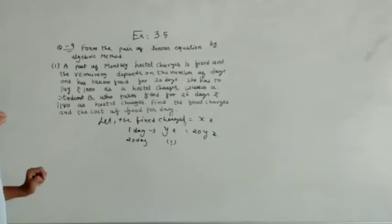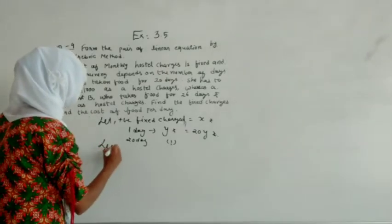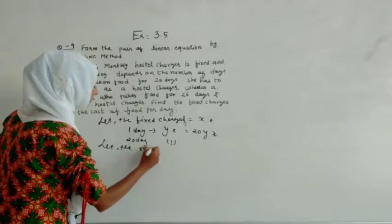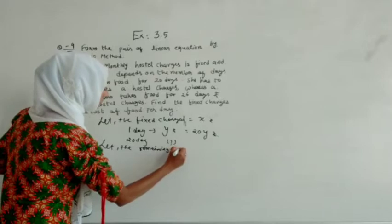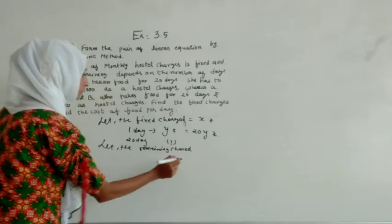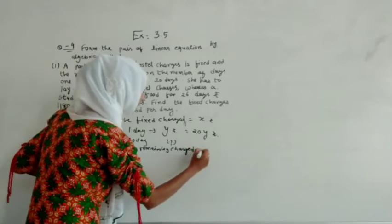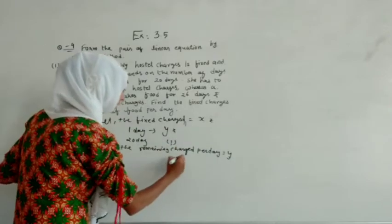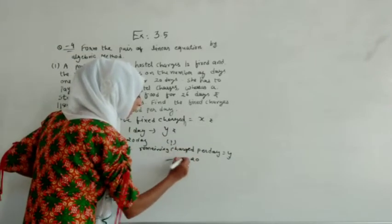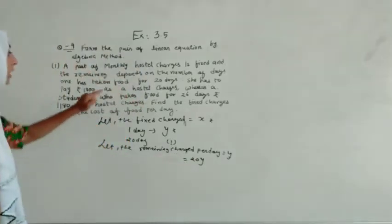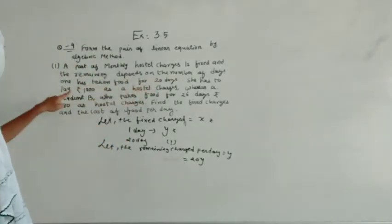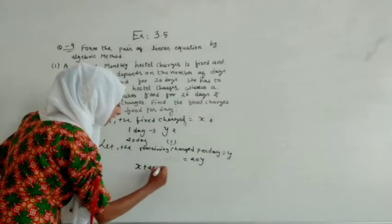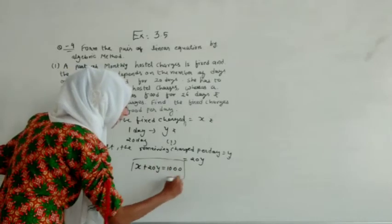The second statement: let the remaining charge per day be Y. So in total it will become 20Y. After taking food for 20 days, student C has to pay 1000 rupees, so we form the equation: X plus 20Y equals 1000. This will be our equation number 1.